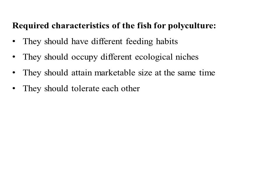The fishes should tolerate each other; if they do not tolerate one another, they will compete among themselves. The species should be non-predatory — if they are predatory, they will feed upon other species in the polyculture system, which will completely affect the polyculture system.